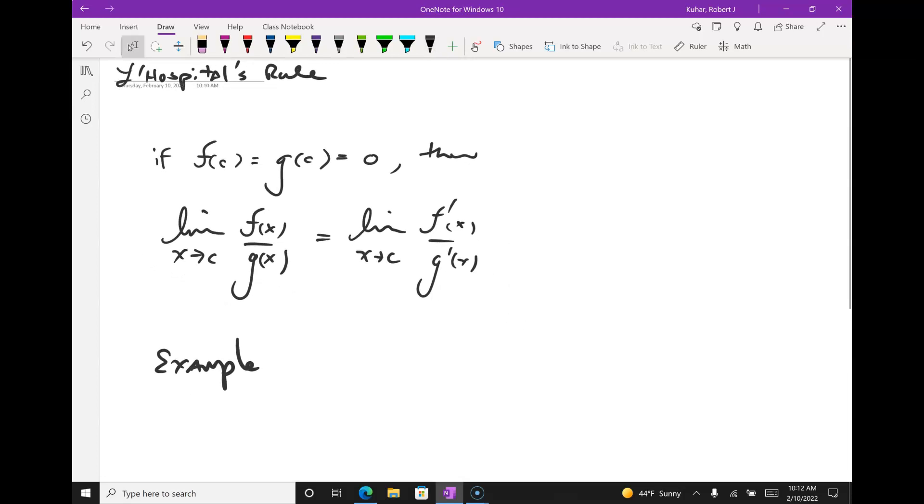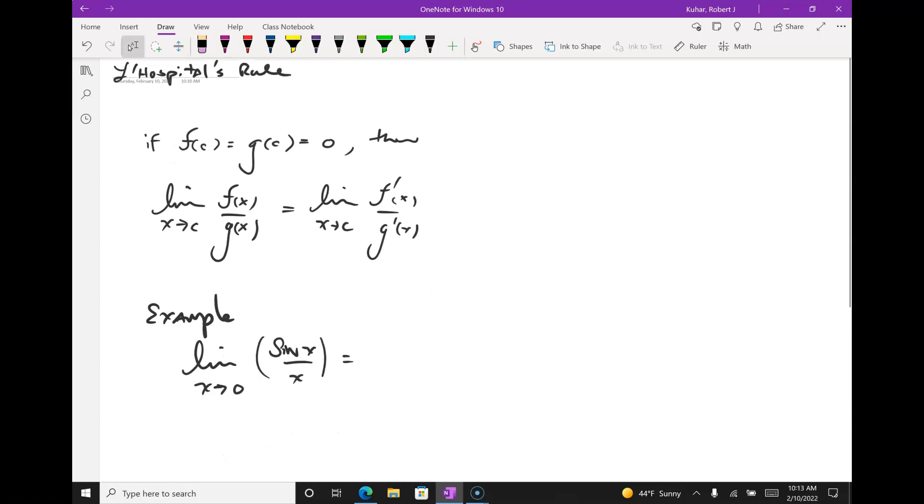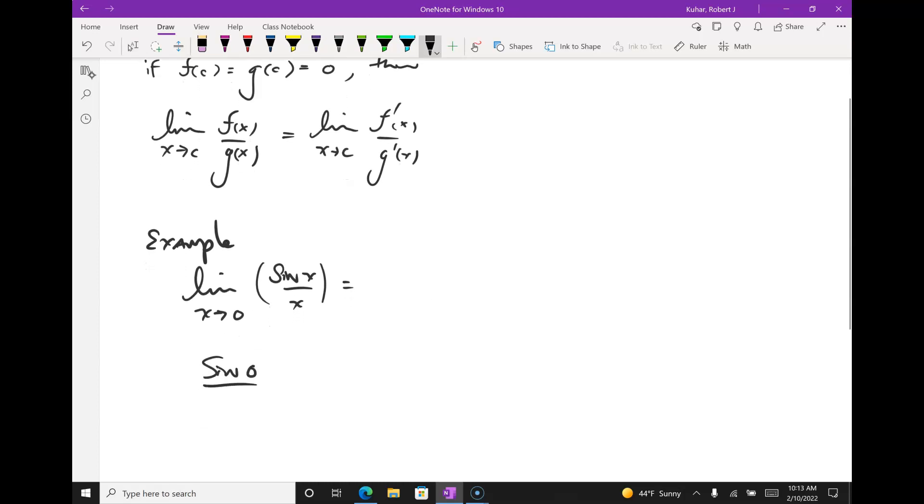So, we had a pretty important limit to memorize, and that was the limit as x goes to zero of sine of x over x. We already know this limit is one. If I plug in here, do you agree I get zero over zero? Sine of zero over zero is zero over zero, so use the hop.